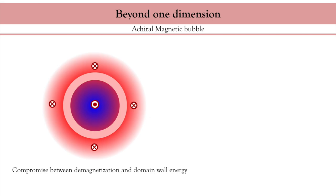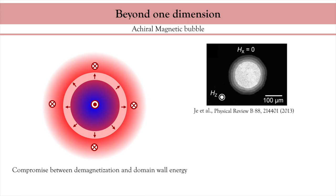The reason this bubble doesn't expand and completely reverse the magnetization is because of the surface tension of the magnetic domain wall. Because of the demagnetization, the magnetization wants to be in-plane, but not too much, so this domain wall doesn't expand unless you increase the external field. You end up with a stable magnetic bubble. The energetics do not impose any specific chirality, and the magnetization direction inside the domain wall itself can take various directions. An experimental image of such a bubble shows how it expands when the field is increased.